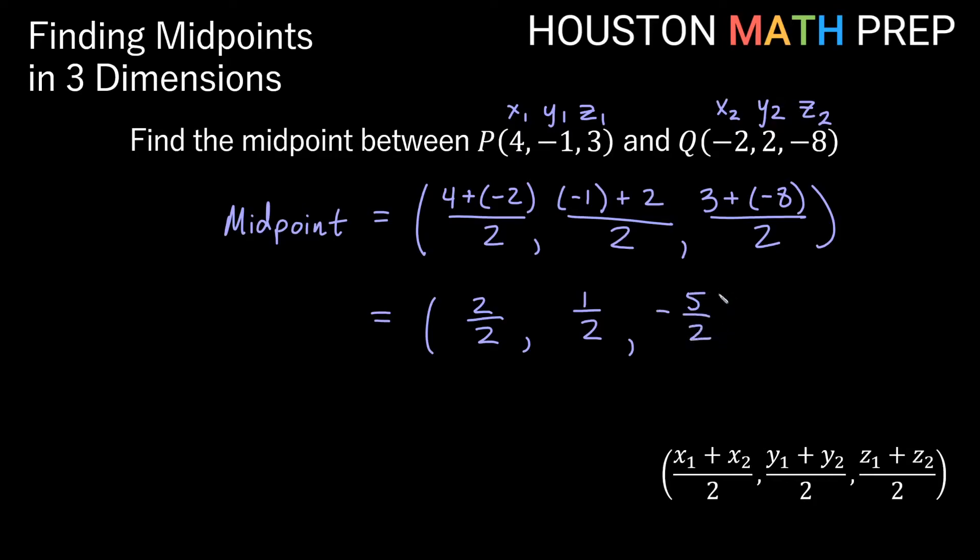And we should reduce any of these that we can. These halves over here, this y and z coordinate can't be reduced, but our 2 over 2 certainly can. So we'll go ahead and say that our midpoint then is going to be 1, comma 1 half, comma negative 5 halves. So that is the point that is halfway between our points P and Q here.